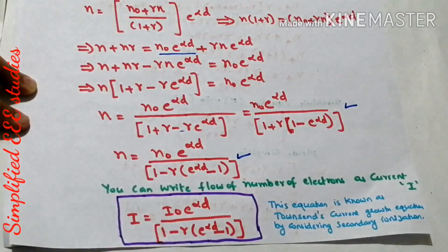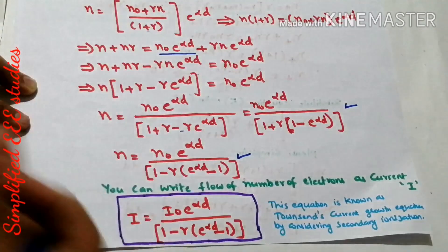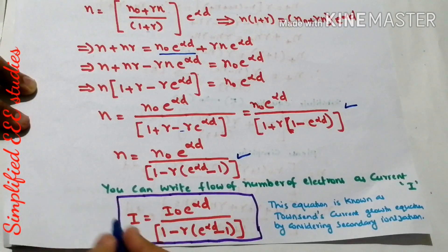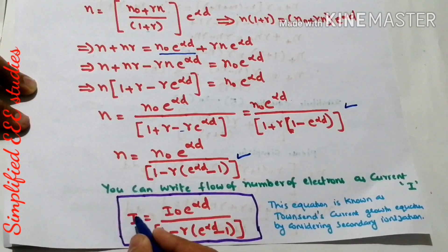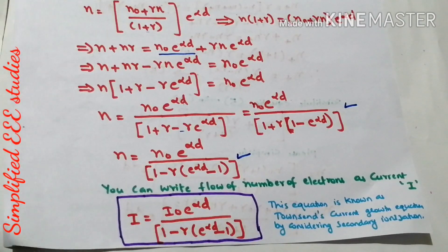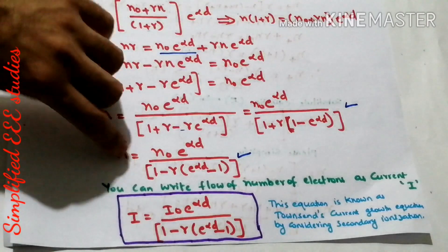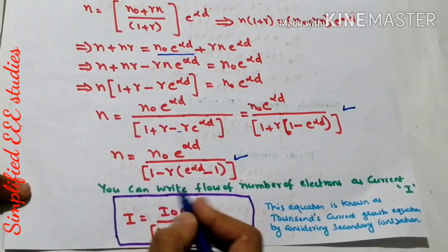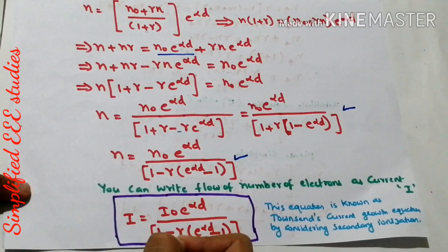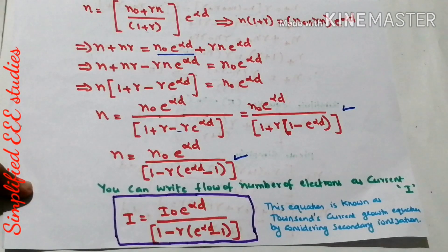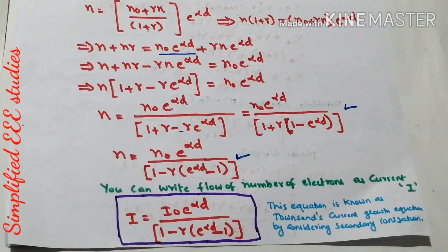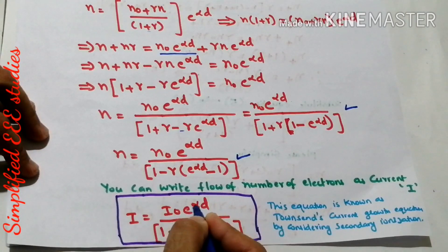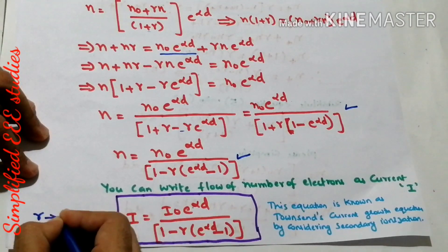Since movement of electrons is nothing but current, replacing N with I and N₀ with I₀, the current form of Townsend's current growth equation considering the secondary ionization process is: I = I₀·e^(αd) / [1 − γ(e^(αd) − 1)], where alpha (α) is Townsend's primary ionization coefficient and gamma (γ) is Townsend's secondary ionization coefficient.